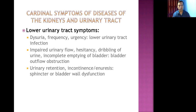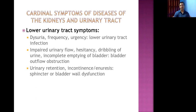Impaired urinary flow can occur if the bladder neck is obstructed. Common features include hesitancy, dribbling, and incomplete voiding — all seen in bladder outlet obstruction. A classic example is benign prostatic hyperplasia in males. Even a stone impacted at the neck of the urinary bladder can produce the same symptoms.